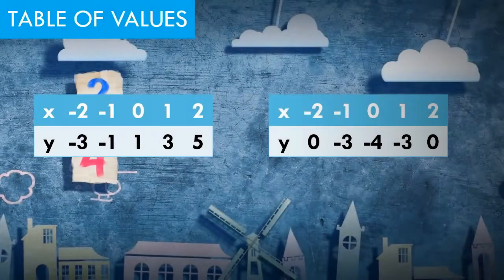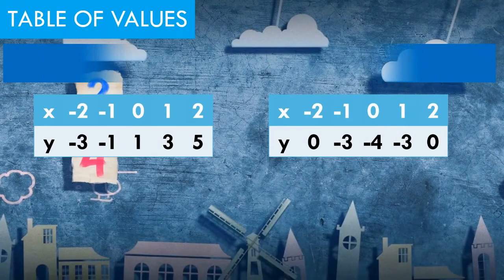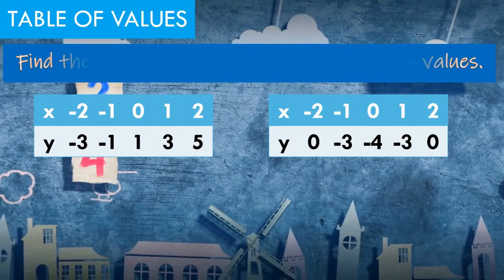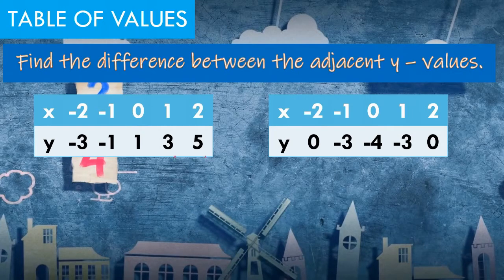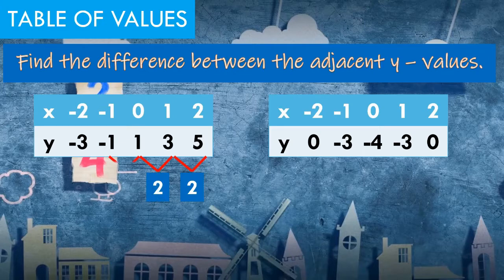Can you easily determine if it is a quadratic function? For example, we have these two given tables of values. To determine which is linear and which is quadratic, we need to find the difference between adjacent y-values, starting from right going to the left. So 5 minus 3 is 2, 3 minus 1 is 2, 1 minus negative 1 is 2, and negative 1 minus negative 3 is also 2.